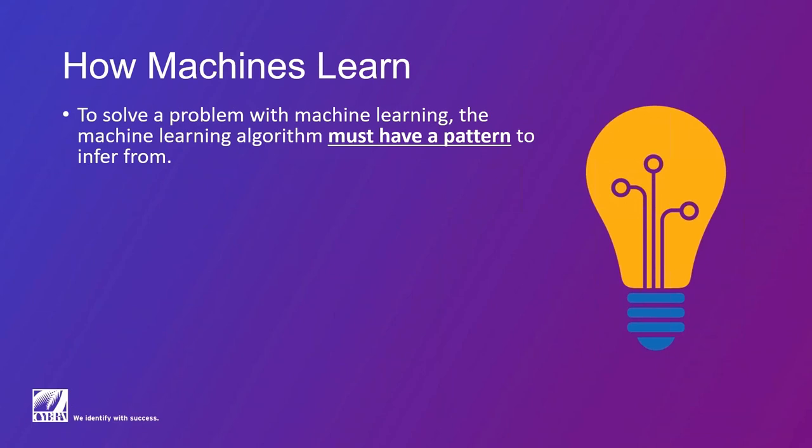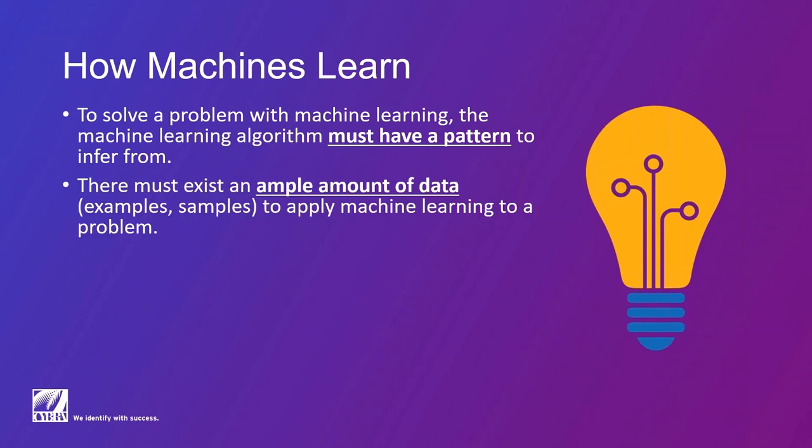So to review here, to solve a problem with machine learning, the machine learning algorithm must have a pattern. So something's got to be predictable and there's that pattern, must have a pattern to glean, to infer from. And then you've got to give it enough of sample, examples to apply machine learning to a problem.